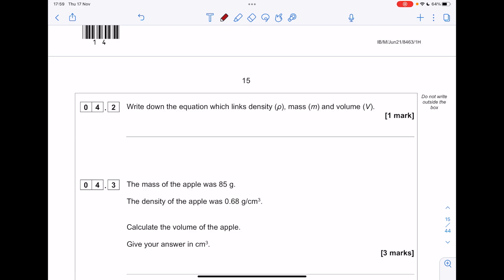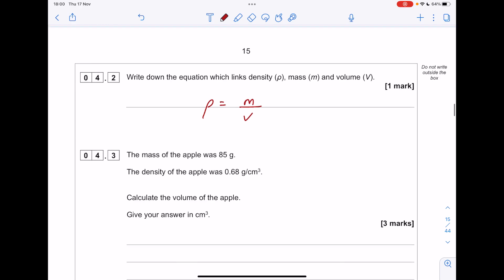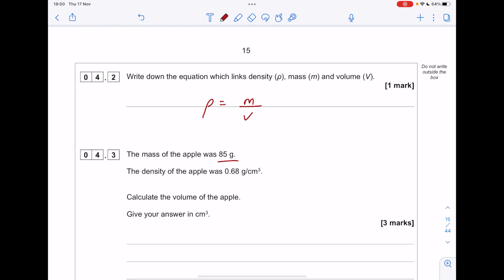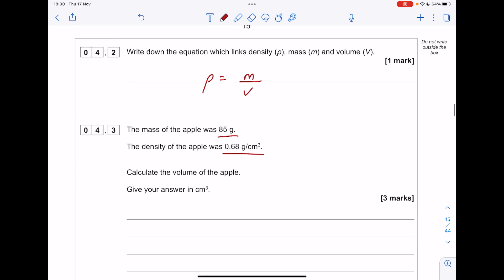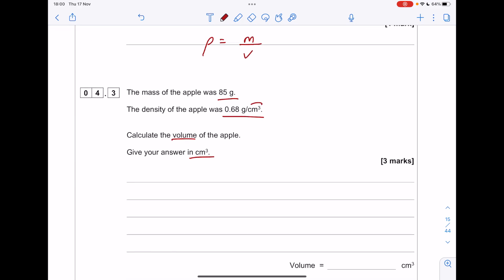Write down the equation which links density, mass, and volume. You can write it out in full or with symbols. The mass of the apple was 85 grams. The density was this. Calculate the volume and give your answer in centimeters cubed. That's helpful. All our units are appropriate. So volume equals mass divided by density. We do 85 divided by 0.68, which is 125.